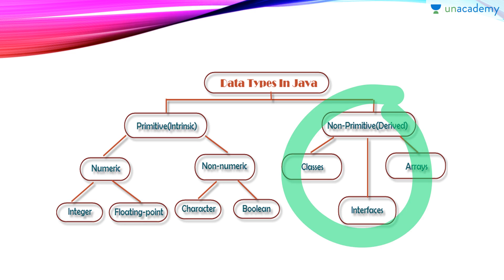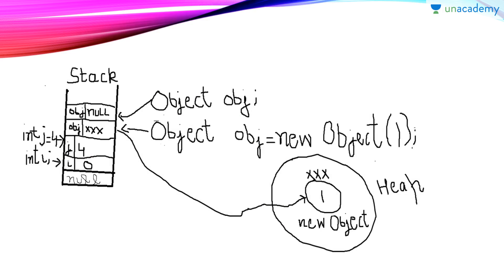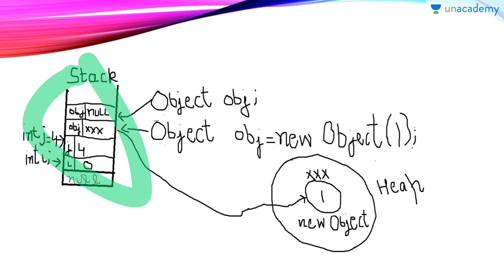I will not be covering non-primitive data types in this lesson because they are vast topics and I will cover them individually in later lessons. In this lesson we will focus on primitive data types. Now, all primitive data types have a default value of zero for numerics, and all non-primitive data types have a default value of null. If we declare int i and do not initialize it, then by default it contains zero, and it gets memory in the stack.